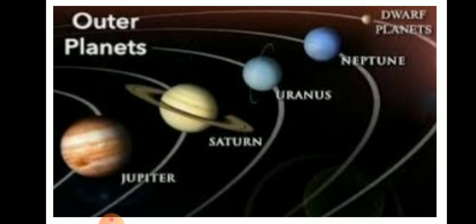Jupiter has 79 moons and the period of revolution is 12 years. Saturn is the second largest planet in the solar system. Saturn has rings made up of rocks which surround the planet, and there are seven shining rings around the middle of this planet. Saturn has 62 moons and the period of revolution is 30 years.